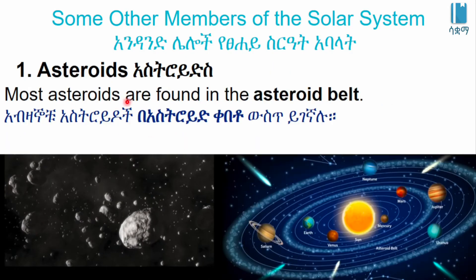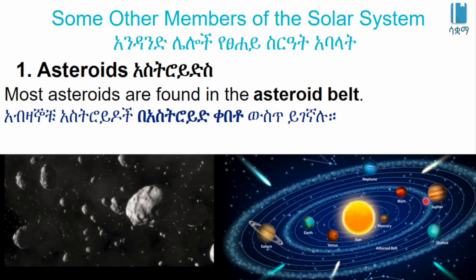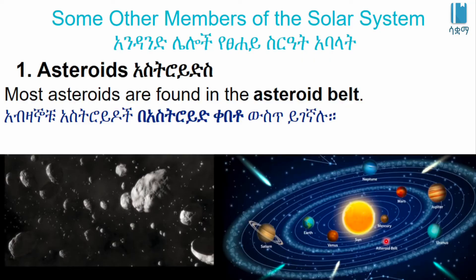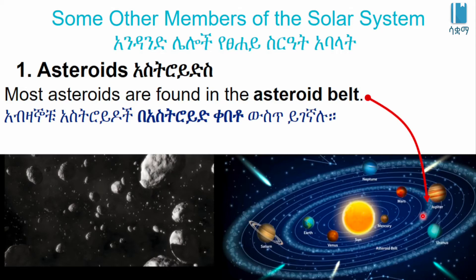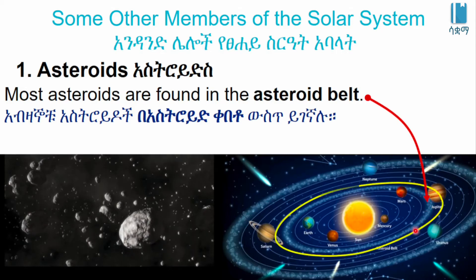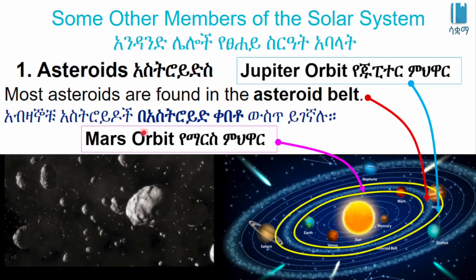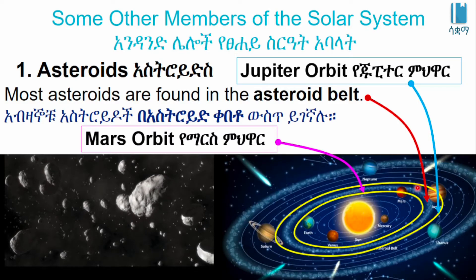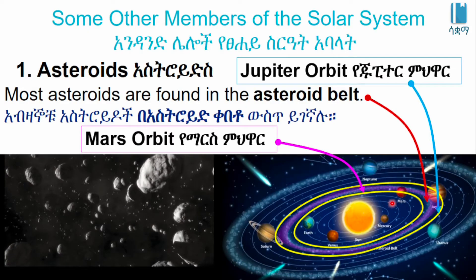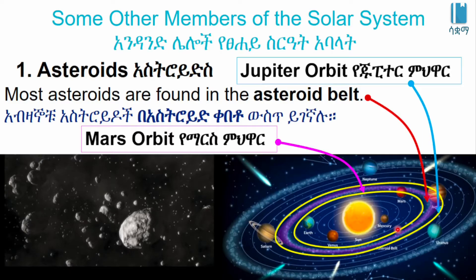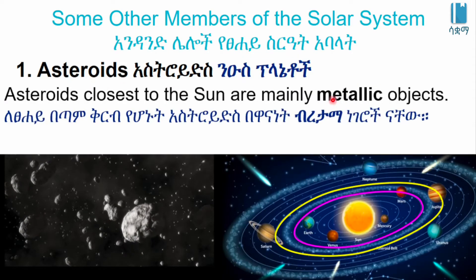Most asteroids are found in the asteroid belt. Asteroids closest to the sun are mainly metallic objects.